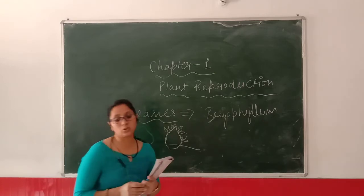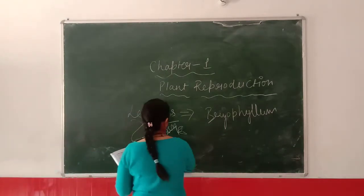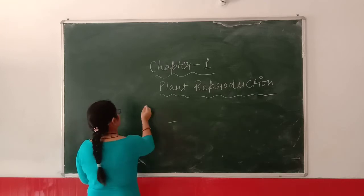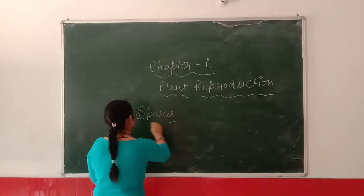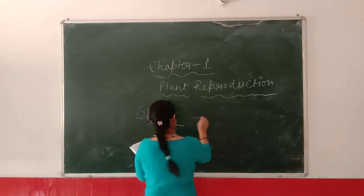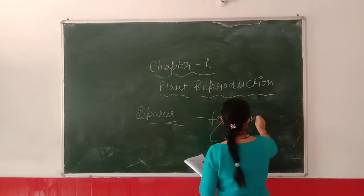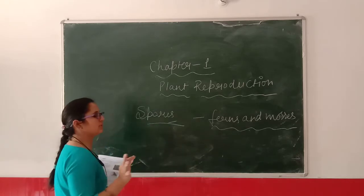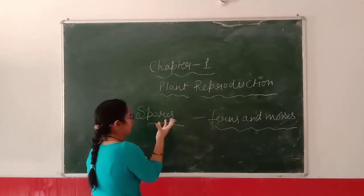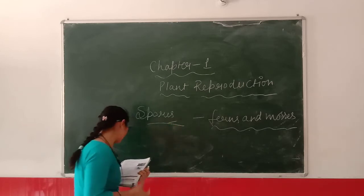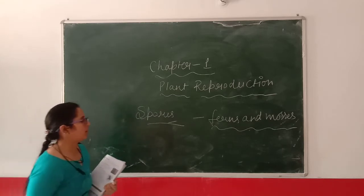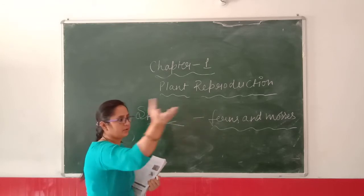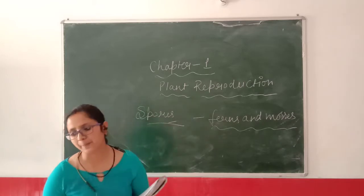Now we will learn about some plants that grow by spores, that is spore formation. Two plants that reproduce by spores are ferns and mosses. The leaves of these plants have spores, and these spores are helpful in generating a new plant. Spores, like seeds, can survive, and when they spread out from the plant with the help of wind, they grow into new plants.